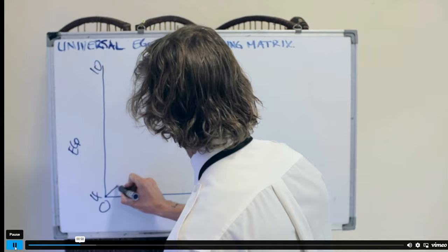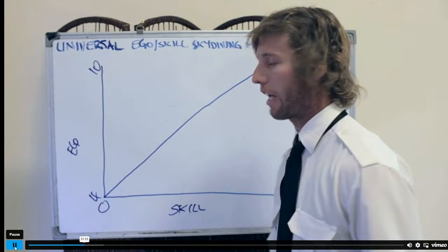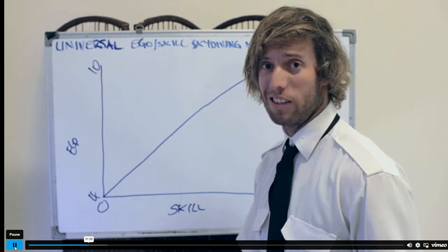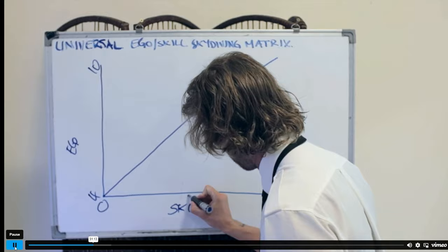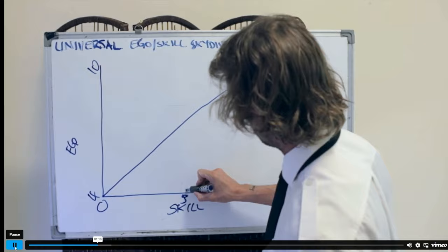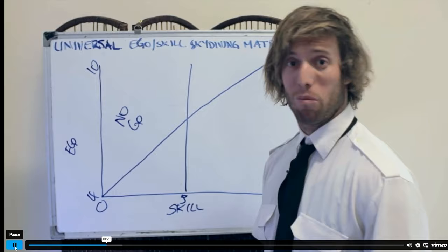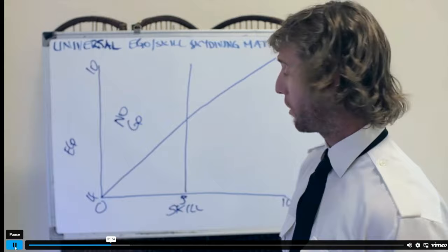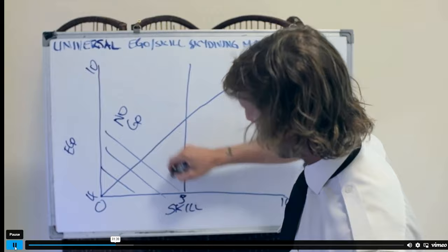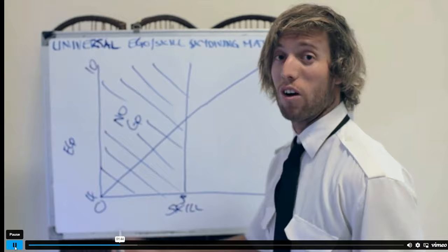We've got our ego-skill line, and it's important to keep referencing back to this line — you don't want to be above it at any time. Below a skill level of five is your no-go zone. These are people we don't jump with, don't fly with, and don't take coaching tips from. Stay away from these people. If you find yourself in the no-go zone, get out of it.